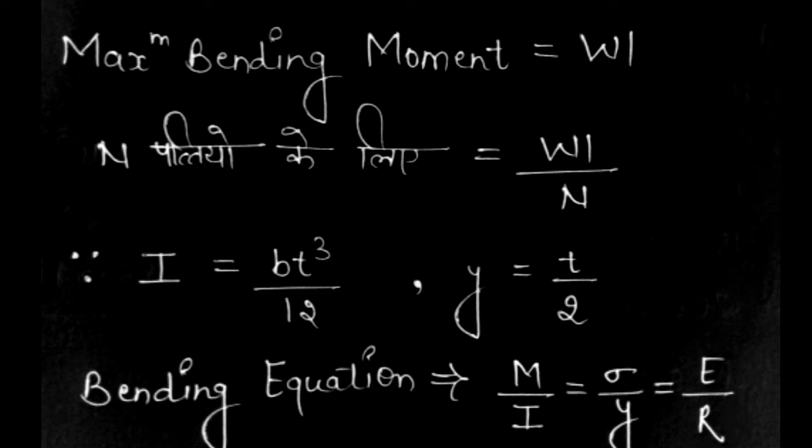Then we will put it in the bending equation. The bending equation is M upon I equals sigma upon Y equals E upon R. So we will find sigma. Sigma is equal to M upon I into Y. M value we know is WL divided by N.